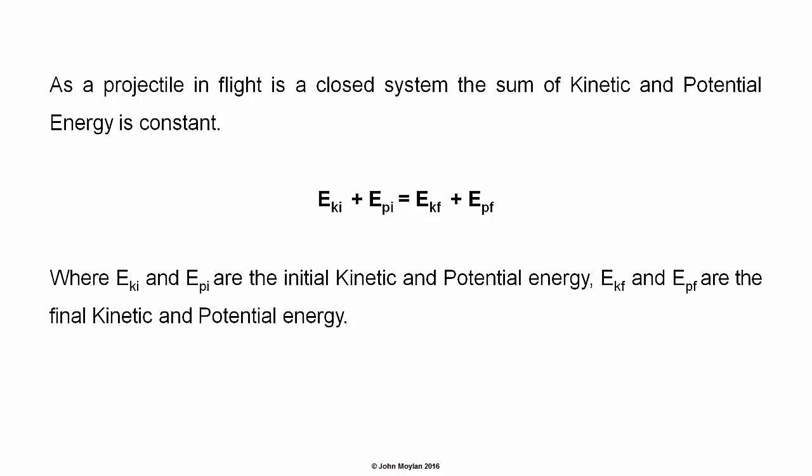At any point in the projectile's trajectory, the sum of kinetic and potential energy will be the same — it's constant throughout the flight of the projectile. In the equation, E subscript Ki and E subscript Pi are the initial kinetic and potential energies, respectively. E subscript Kf and E subscript Pf are the final kinetic and potential energies, respectively.